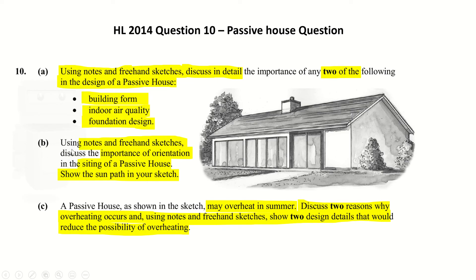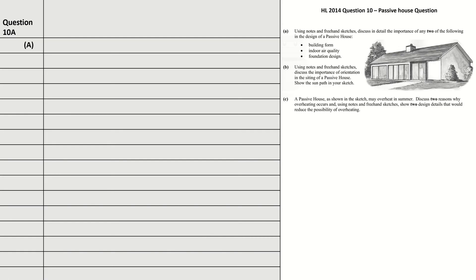Part B: using notes and freehand sketches, discuss the importance of orientation in the siting of a passive house — show the sun path in your sketch. Part C: a passive house as shown in the sketch may overheat in summer. Discuss two reasons why overheating occurs and, using notes and freehand sketches, show two design details that would reduce the possibility of overheating. I'm going to move on now with Part A.